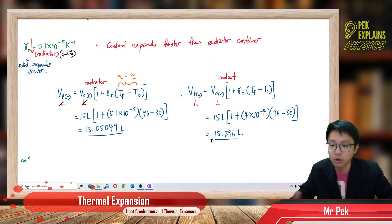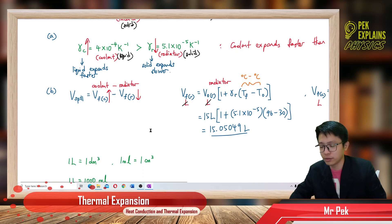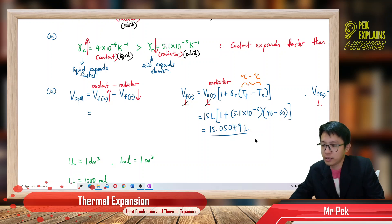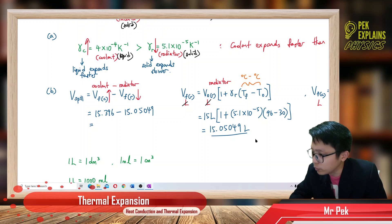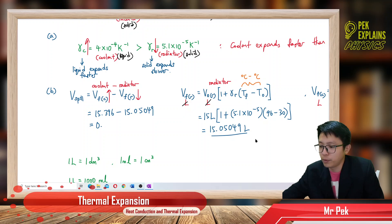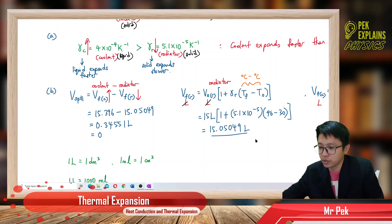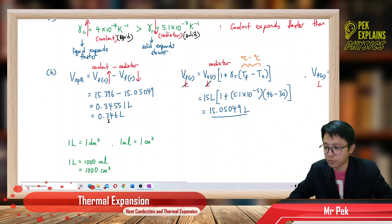So how much more did the coolant expand compared to the radiator? That difference is the volume spilled out. We take 15.396 minus 15.05049 and we get 0.34551 liters, which is approximately 0.346 liters. That is the volume spilled out.